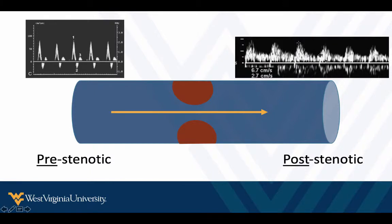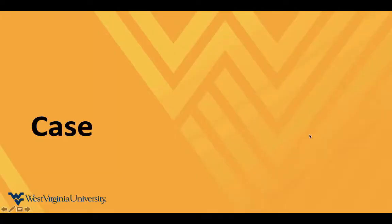Well beyond the stenotic lesion in the post-stenotic area, we'll see lower velocity, low-resistance flow. The game when looking at limb ischemia is to trace the arteries up the extremity until we transition from that distal low-resistance pattern to normal flow. When we see that transition, we know our lesion lies somewhere between those two signals, even if we can't identify it specifically on ultrasound.